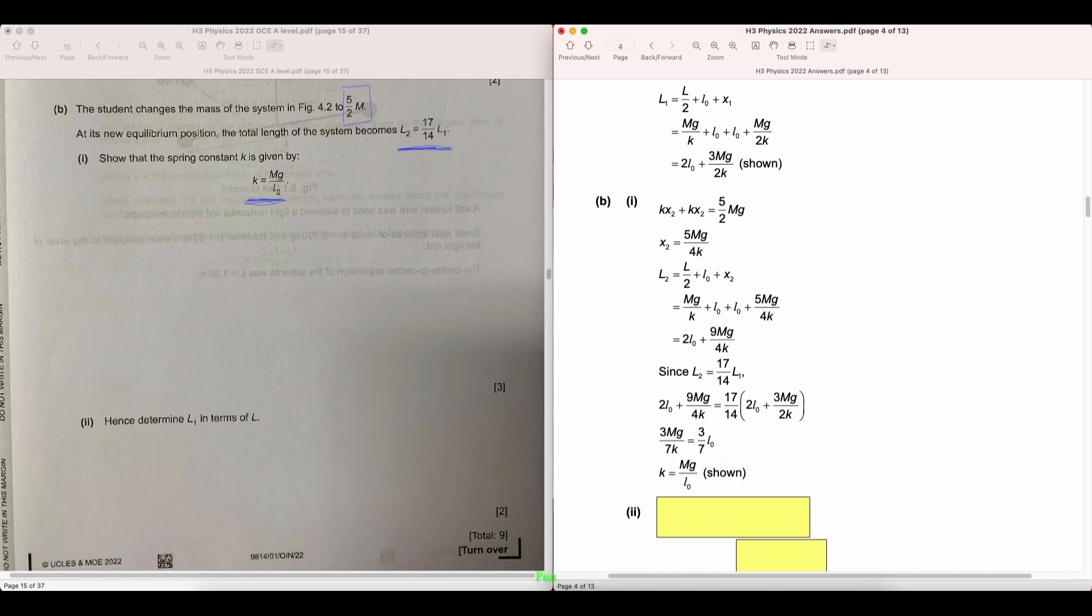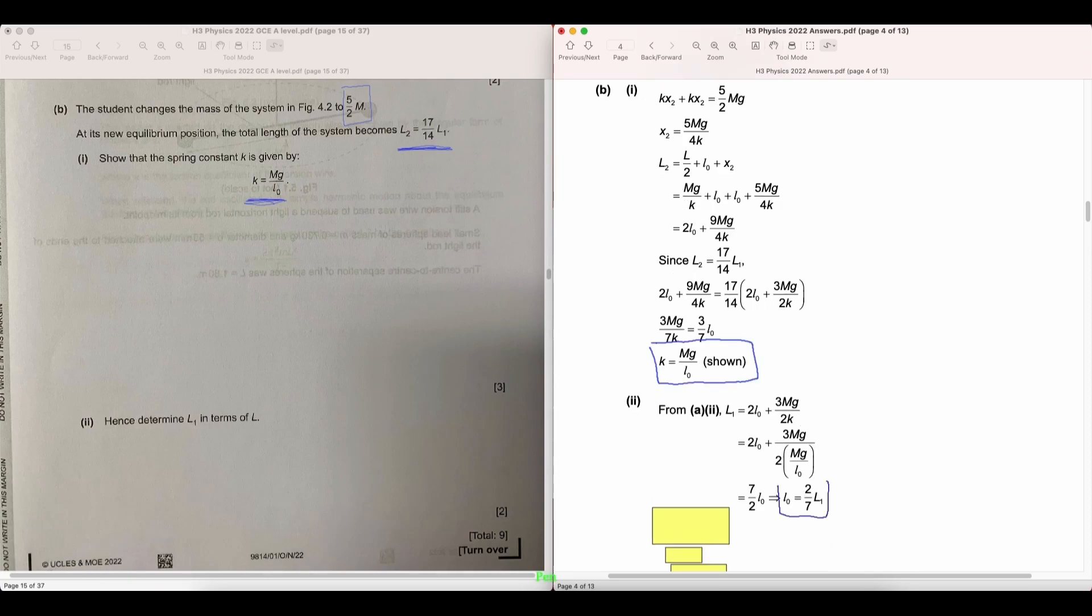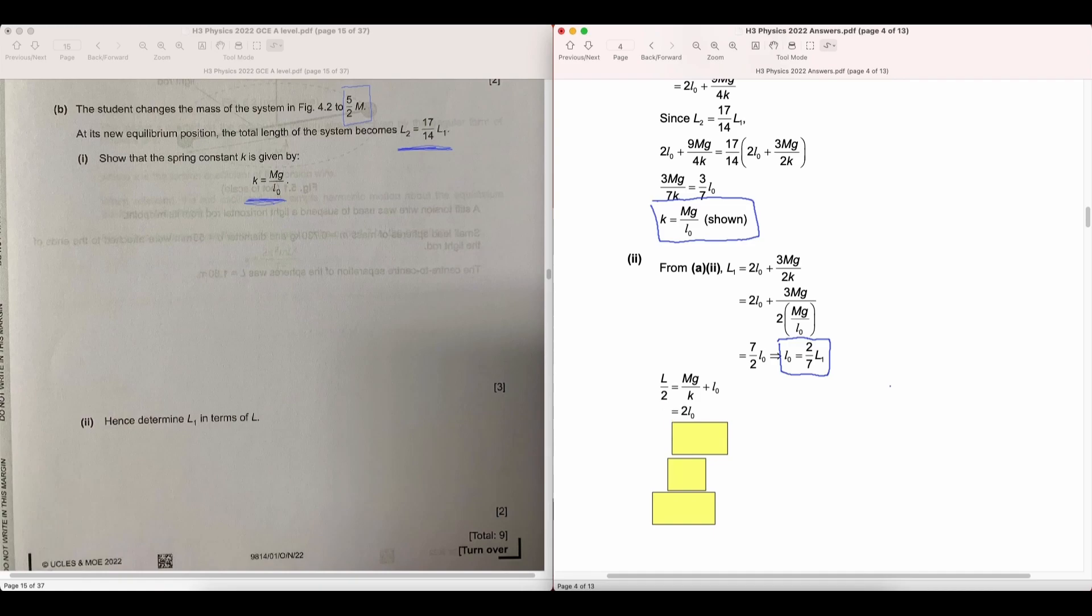And lastly, substituting in the value of K that we've gotten into the original equation for L1, we can get L0 in terms of big L1. Substituting it back into the original equation we have would give us the following expression for L1.